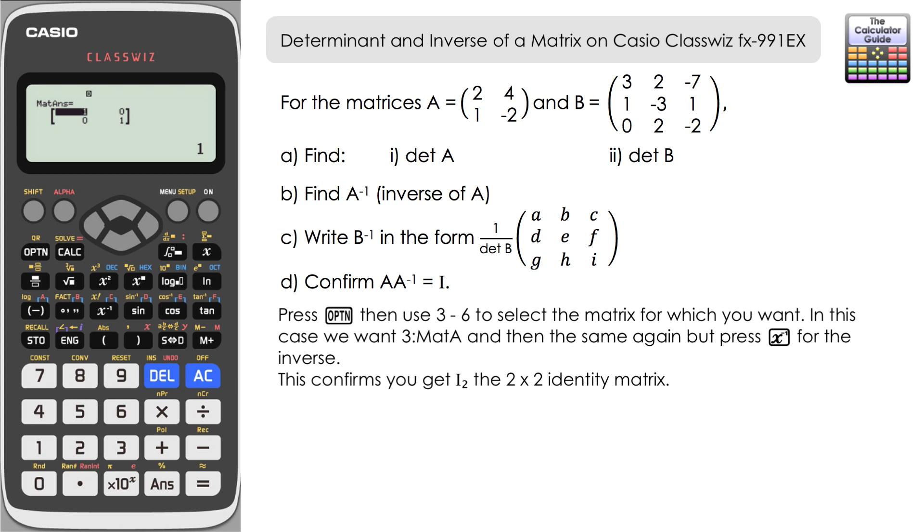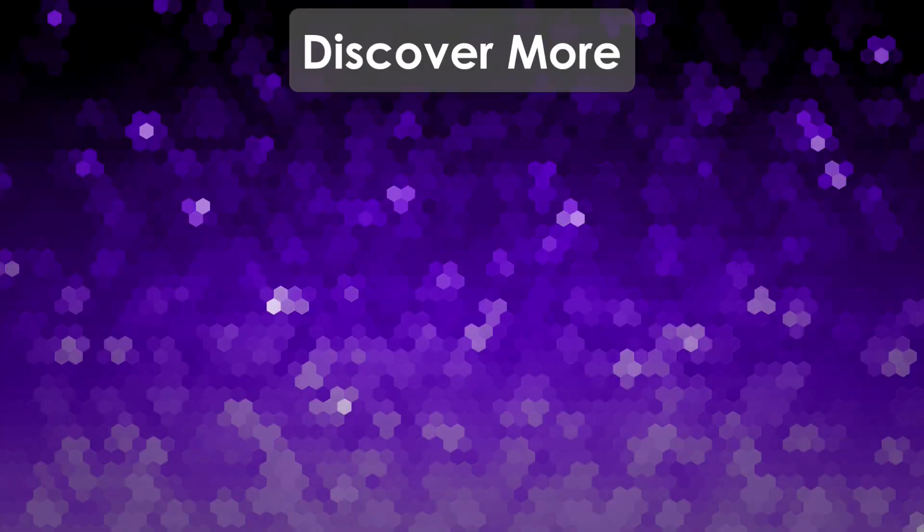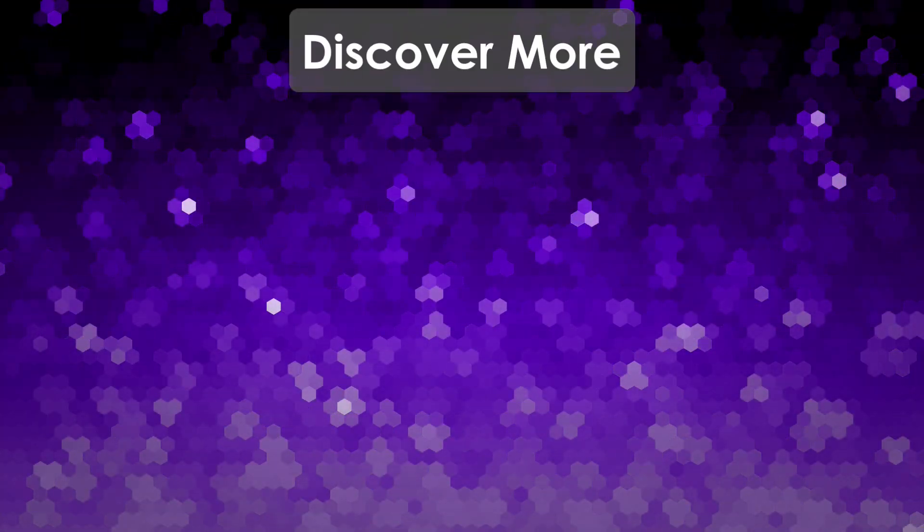So there we go, how we can use the Casio ClassWiz FX-991EX to find the determinant and the inverse of a matrix, two different ways to present that. Don't forget to like and subscribe for future videos, but that's it for this video. Thank you very much for watching and I shall see you next time on the calculator guide.